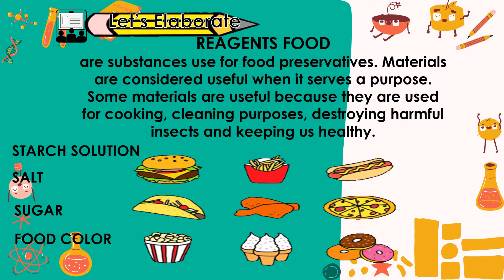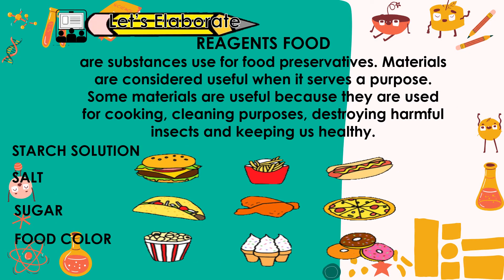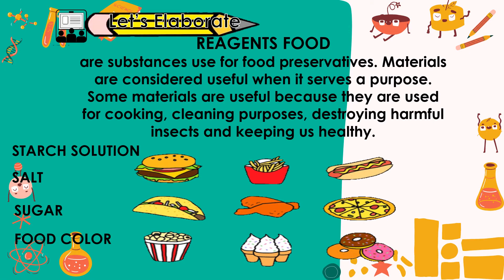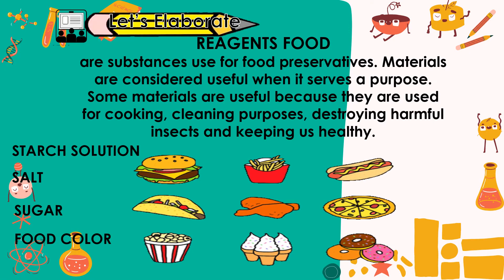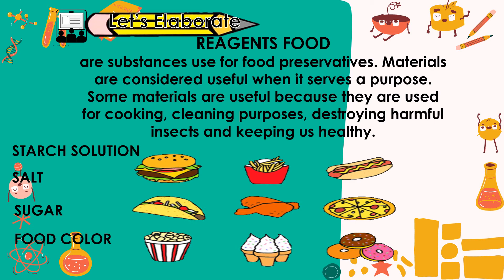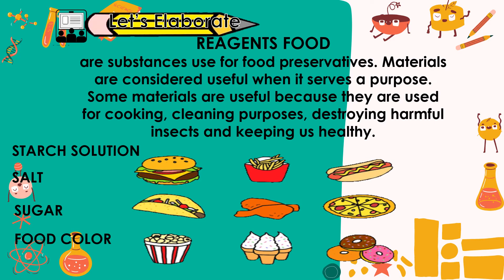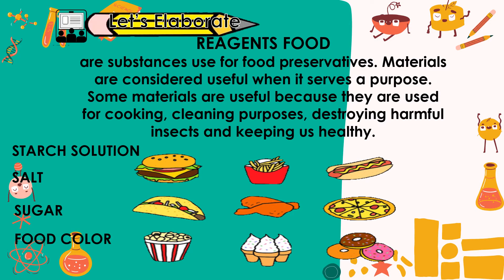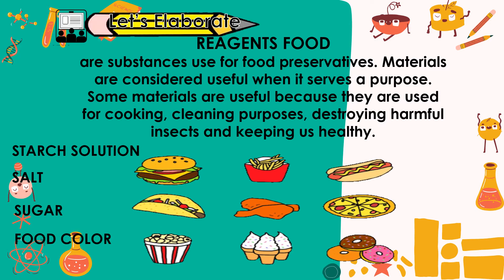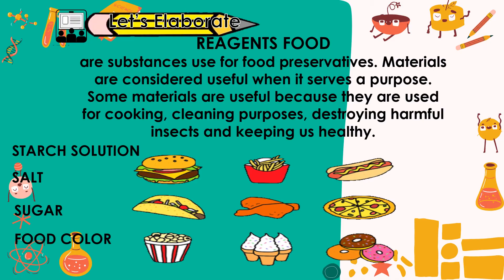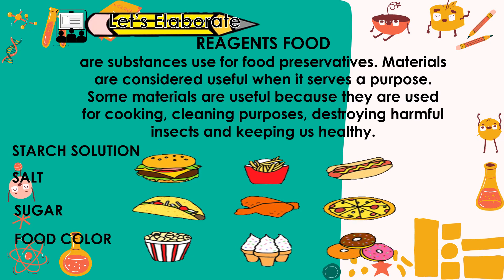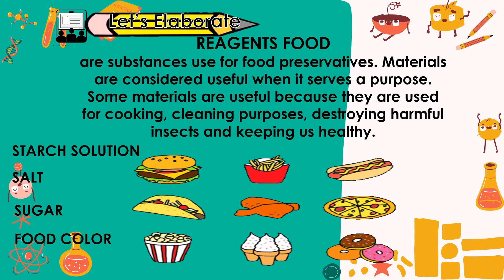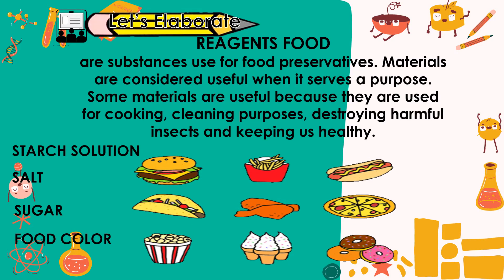Last but not least is what we call reagents food. Reagents food are substances used for food preservatives and additives. These are materials considered useful when they serve a purpose — some are used for cooking, food, cleaning purposes, or destroying harmful insects and keeping us healthy. Examples are starch solution, salt, sugar, and food color.